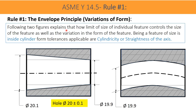The following two figures explain how the limit of size of an individual feature controls both the size of the feature and the variation in its form. Being a feature of size as an inside cylinder, the applicable form tolerances are cylindricity or straightness of the axis. When size limits are specified in the drawing, these size specifications consider the limit requirement of the size, and those limits also constrain the straightness and cylindricity — that is, the form error of the feature.